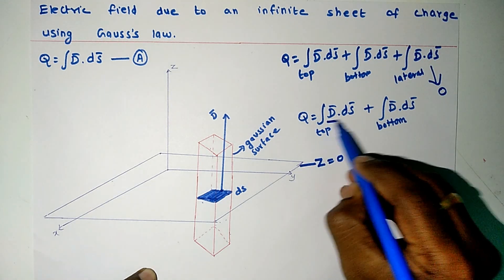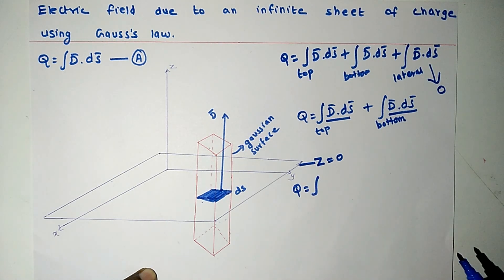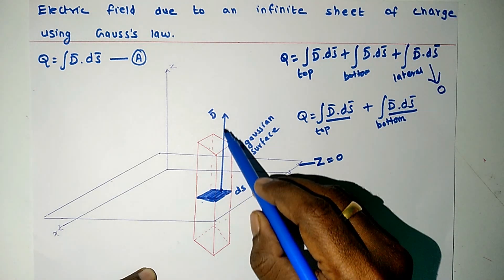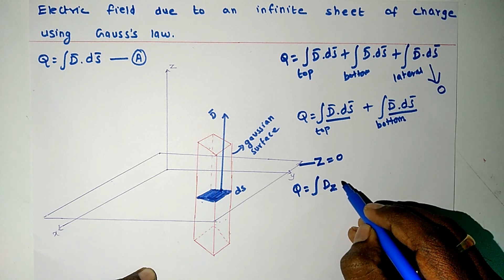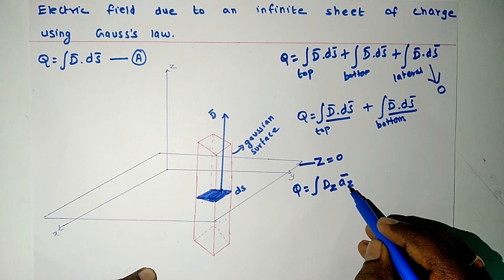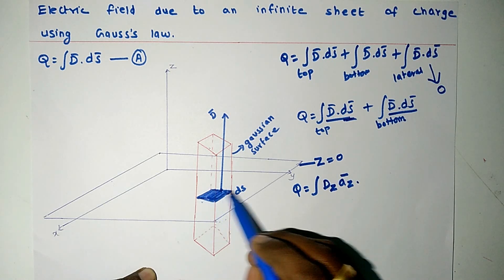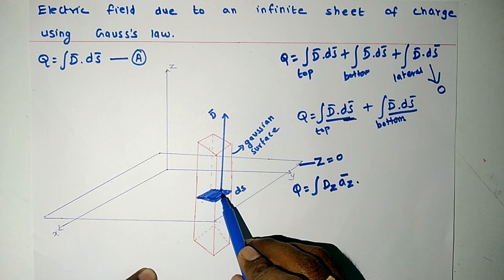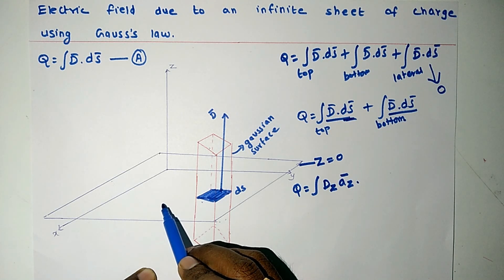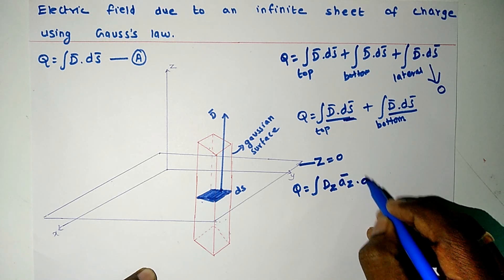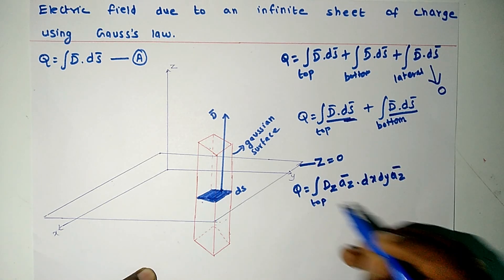Now we shall find out the value of D vector and ds vector for both sections. As you move from the charge distribution passing through the top surface, the value of z will keep on increasing. So we can write D vector as Dz times az, since az is the unit vector along the z-axis. For ds on the top surface, as we move ds around the charge distribution the value of z remains the same but x and y change, so we can write ds vector as dx dy az.